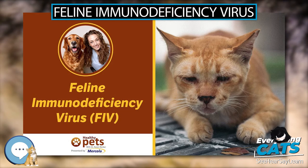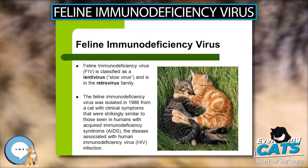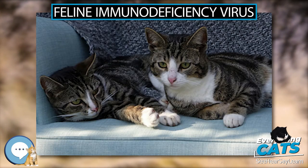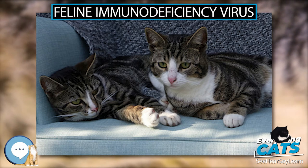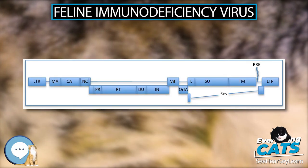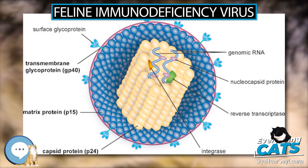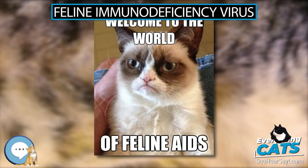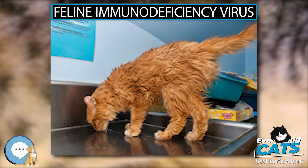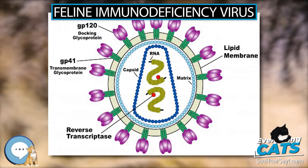FIV progresses through similar stages to HIV in humans. The initial acute phase is accompanied by mild symptoms such as lethargy, anorexia, fever, and lymphadenopathy. This initial stage is fairly short and is followed by the asymptomatic stage, where the cat demonstrates no noticeable symptoms for a variable length of time — some cats stay in this latent stage for only a few months, but for some it can last for years. Factors influencing the length of the asymptomatic stage include the pathogenicity of the infecting virus and FIV subtype, the age of the cat, and exposure to other pathogens. Finally, the cat progresses into the Feline Acquired Immune Deficiency Syndrome stage, wherein the cat is extremely susceptible to secondary diseases that inevitably are the cause of death.